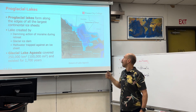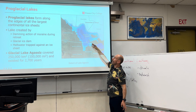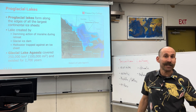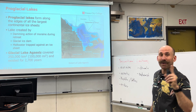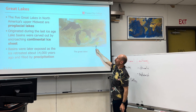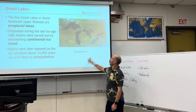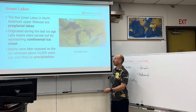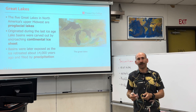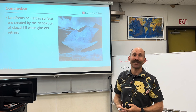The Laurentide Ice Sheet carved the Great Lakes, and when it retreated they filled with water. A lot of that water is now underneath the ground in the Ogallala Aquifer; it has since evaporated and become part of the water cycle, but it also filled the Great Lakes. The Great Lakes are pro-glacial lakes that originated during the last ice age from the Laurentide Ice Sheet — the basins were filled through melting and precipitation. So we see depositional landforms being created through the dynamic nature of the movement of glaciers across Earth's surface.